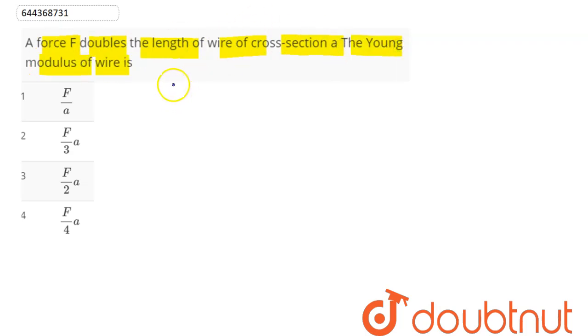Young modulus is given as stress divided by strain. Stress here is equal to force divided by cross section area, which is given as A, divided by change in length divided by original length.